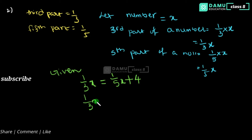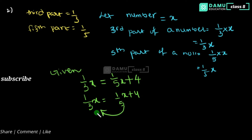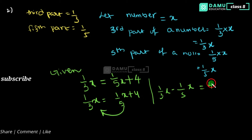So 1/3 x will be equal to 1/5 x plus 4. Now shift 1/5 x to the other side, so 1/3 x minus 1/5 x will be equal to 4. Take 1/3 minus 1/5.